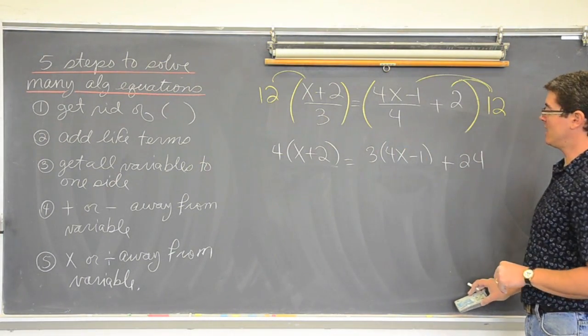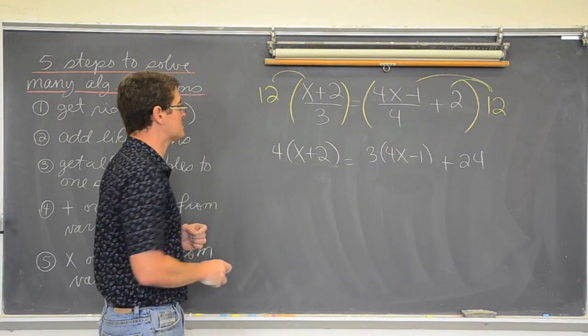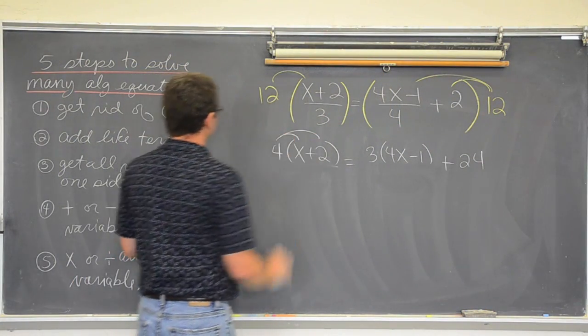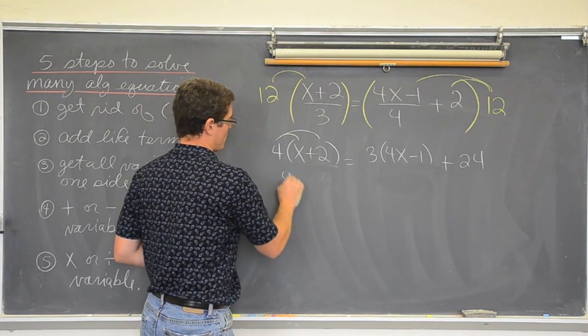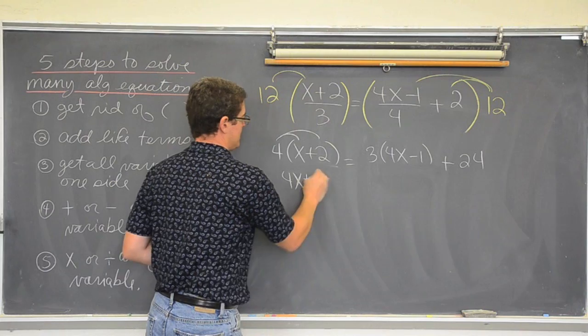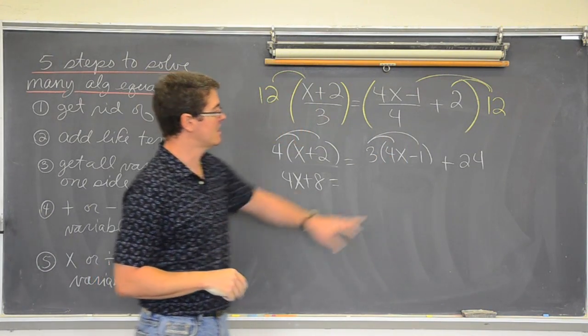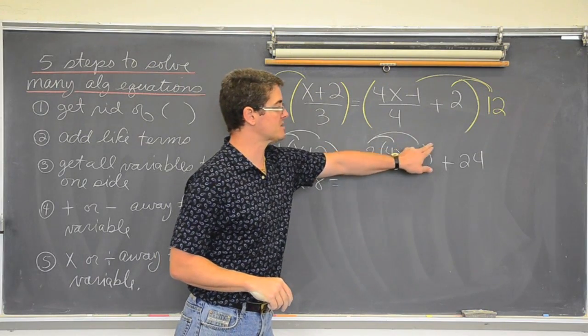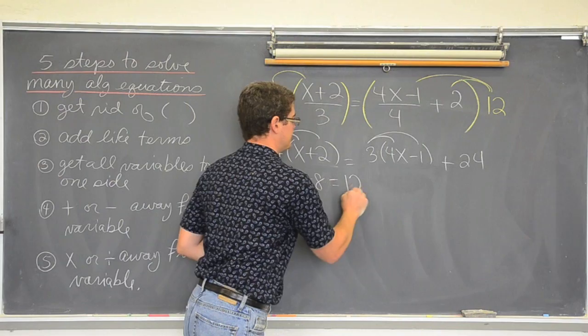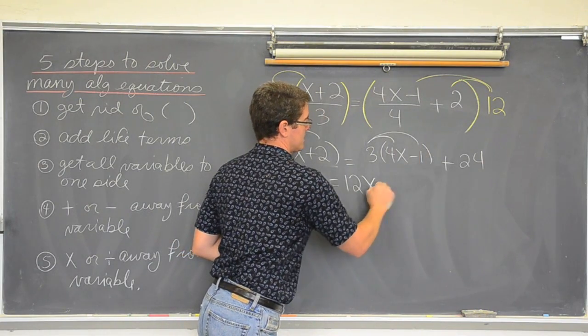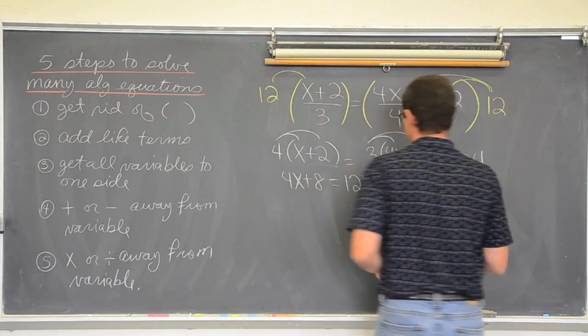This may look like more of your difficult questions at the end of an algebra one book when you are first solving multiple step equations. Let's just take it one step at a time. You have parenthesis, step one, get rid of them. So, four times one x is four x. Four times two is eight. Equals, again with the distributive property because there is a number in front of that parenthesis. If there were division or an exponent, it would be a little more complicated, but there is not. So, three times four is twelve. Three times negative one is negative three. And twenty-four.